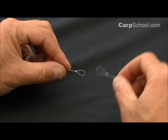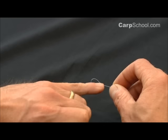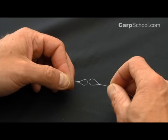Joining two bits of line together using a loop-to-loop connection is really incredibly strong. As long as the knots you've used to create the loop, i.e. this one here and here, are good strong knots.